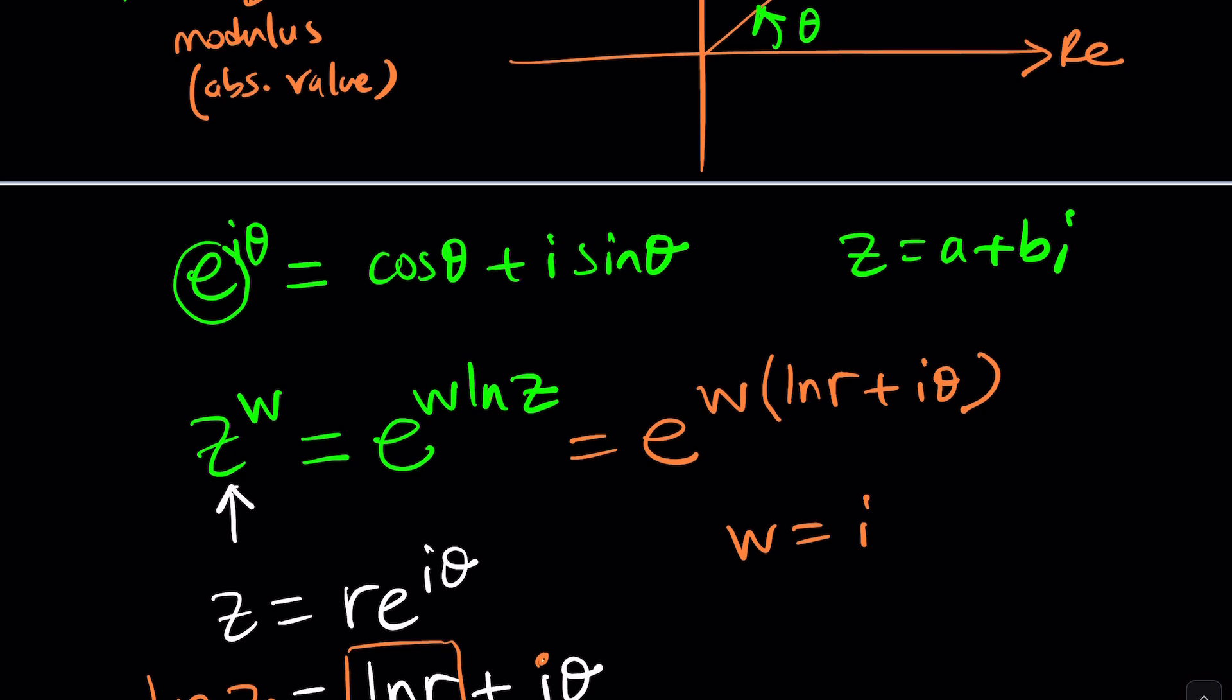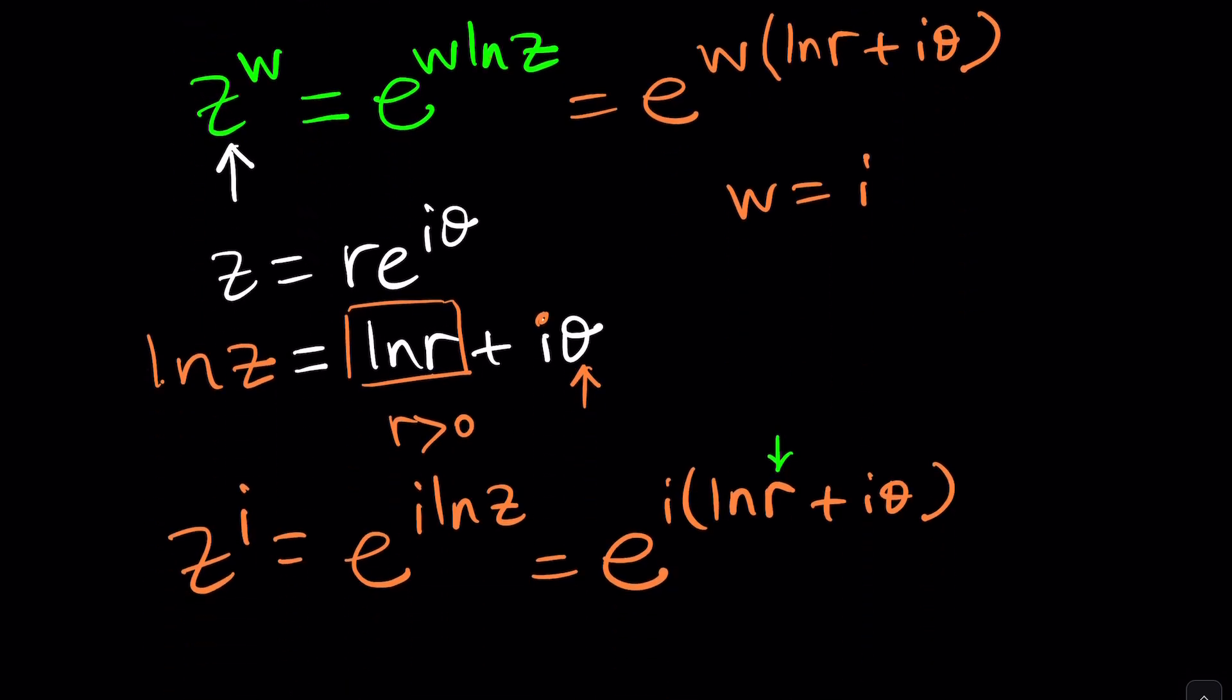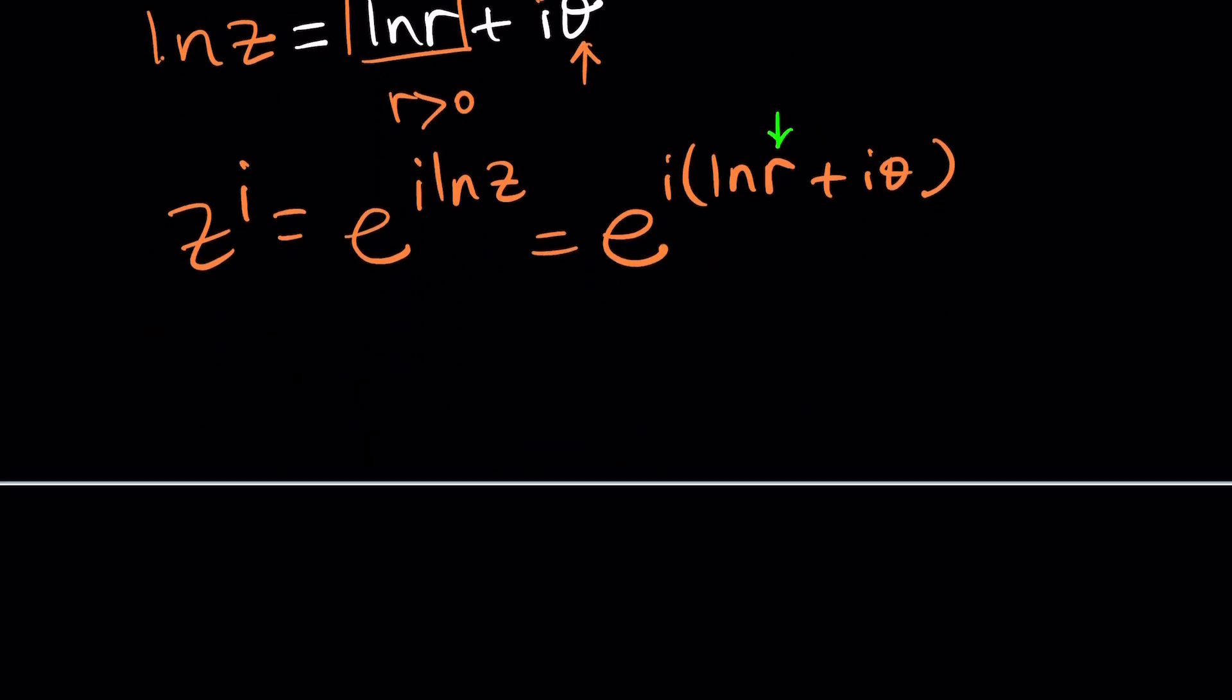Actually, z to the power, wait a minute, I'm confusing myself. e to the power i ln z. Yeah, that seems correct. Anyways, okay, that makes sense, hopefully. So this is what I have on the left-hand side.